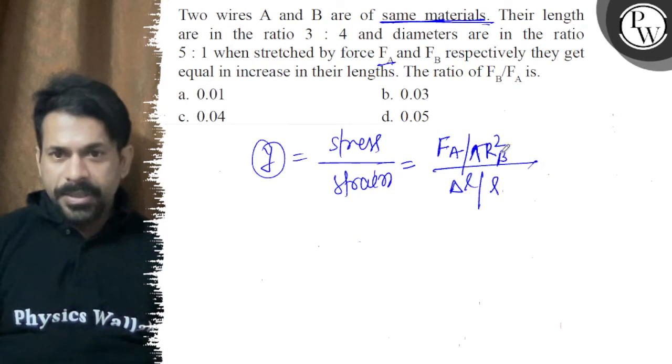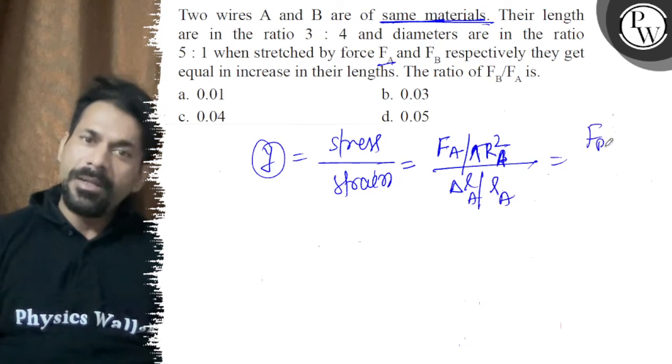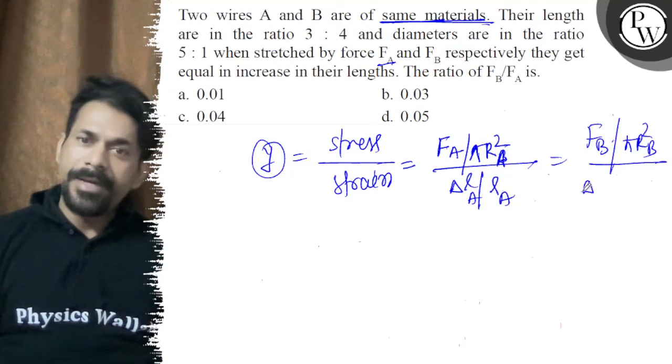that for wire A is equal to FB upon pi R square of B divided by del LB by LB, right.